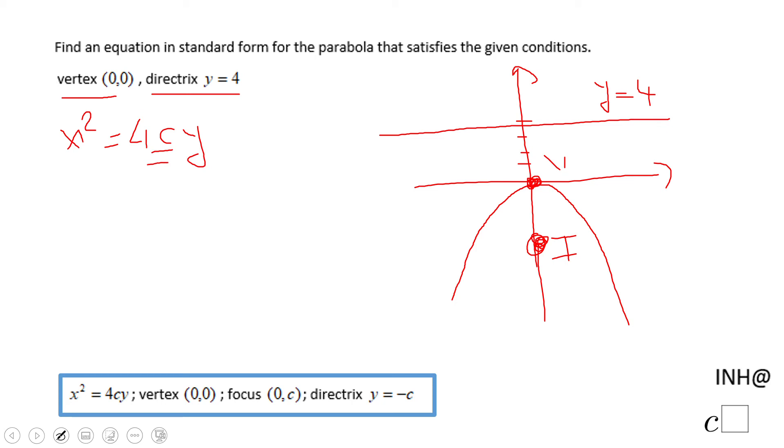This c is this distance, which in our case is 4. Now you need to be careful because this is an upside down parabola, so you need to put a negative: 4 times 4 times y. So the equation is x-square equals negative 16y.